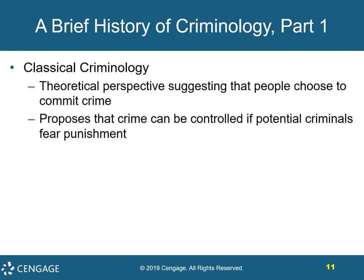Now let's go through a brief history of criminology. There's classical criminology, which involves several people and concepts. One prominent person was Cesar Beccaria. His thinking was that people commit crime when the potential pleasure outweighs the threat of future punishment, and that people have free will and choose to commit crime. They also commit crime when it is attractive and promises great benefits with little effort.